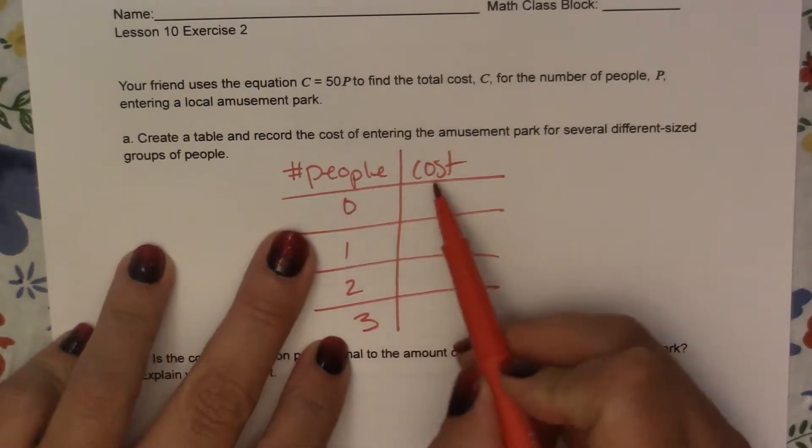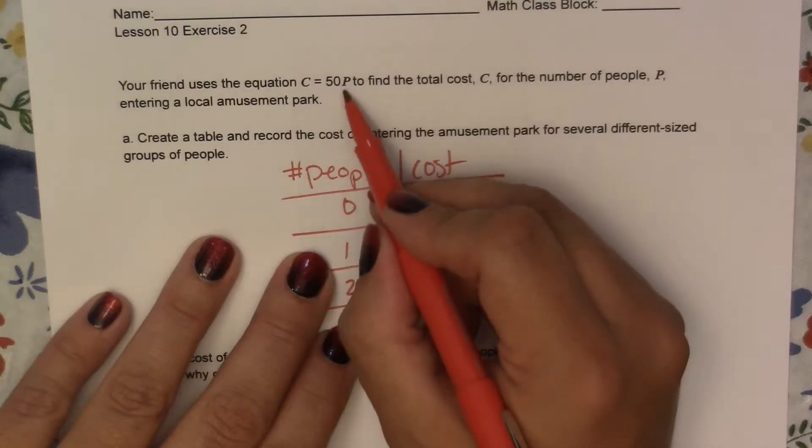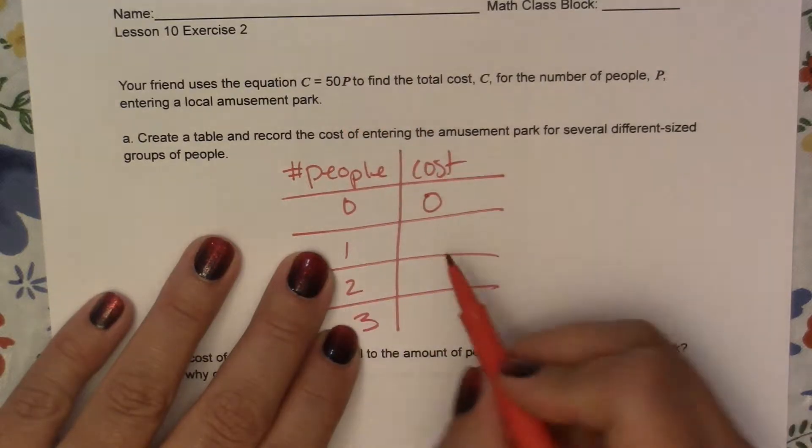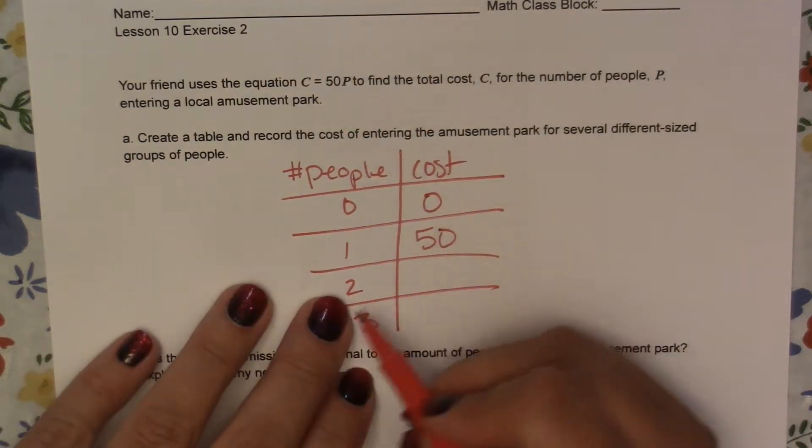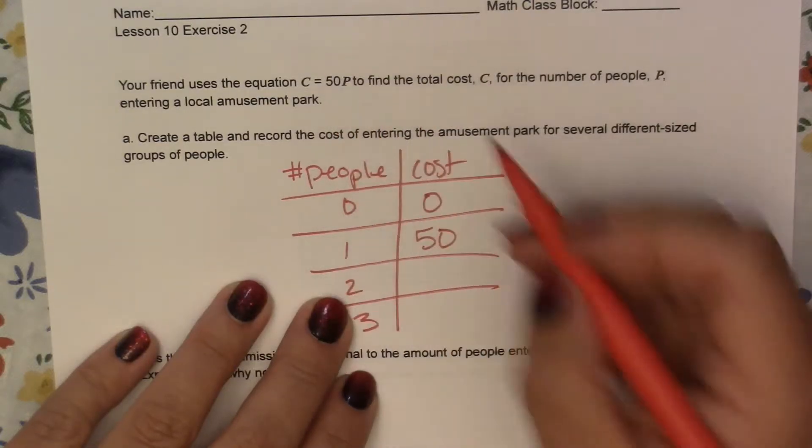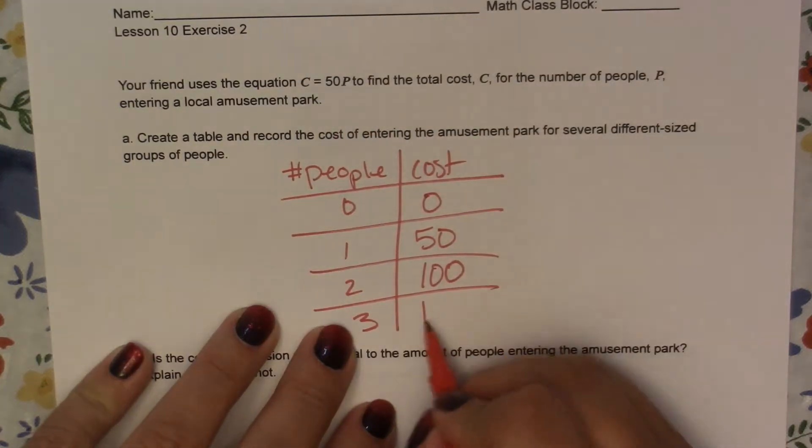So if 0 people go, that would cost us $0. If 1 person goes, this would fill this in with 1, so 1 times 50 would be 50. If I substitute in a 2, 2 times 50 is 100. And then a 3, 3 times 50 is 150.